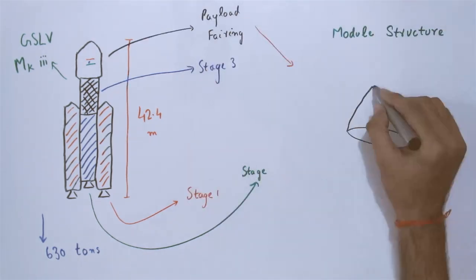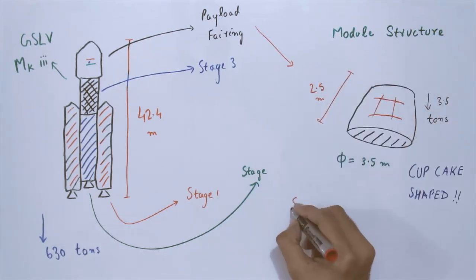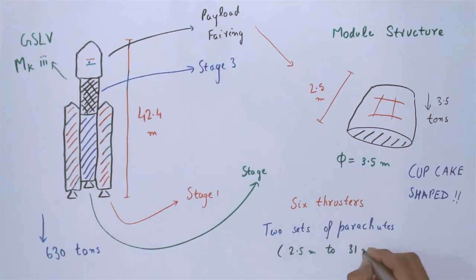The cupcake-shaped crew module is 2.5 meters tall and 3.5 meters in diameter. It carries six liquid propellant thrusters and two independent sets of parachutes with diameters varying from 2.5 meters to a whopping 31 meters.